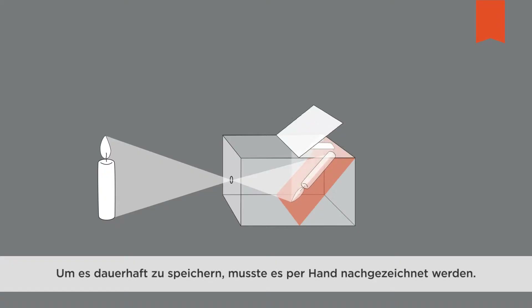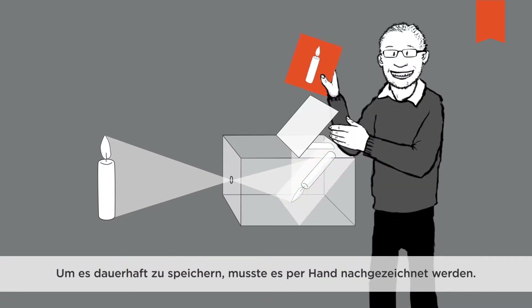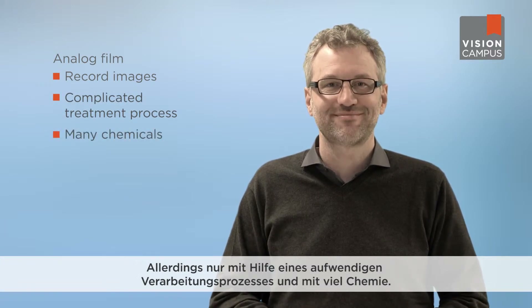There was no way to record the image permanently. To actually preserve the image, you needed a person to trace it. The invention of analog film provided the chance to record an image permanently, albeit using a complicated treatment process and many chemicals. Later, electron tubes were used to record images electronically and transfer that information, though actual storage was still handled using purely analog technology.